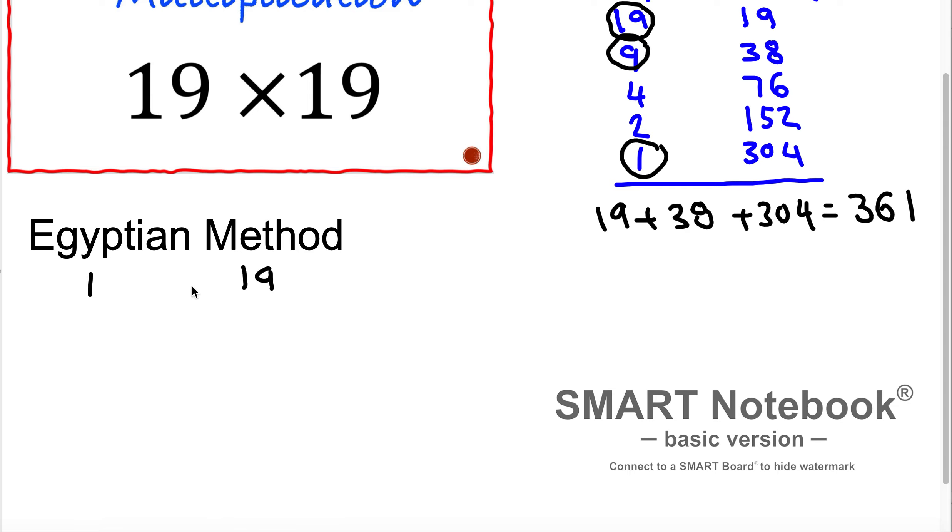And we are doubling both numbers 1 and 19. If we are doubling 1 it's going to be 2. If we are doubling 19 it's 38.